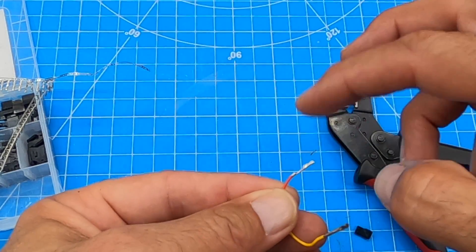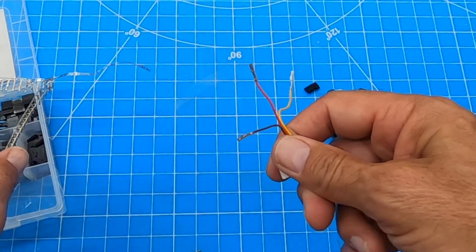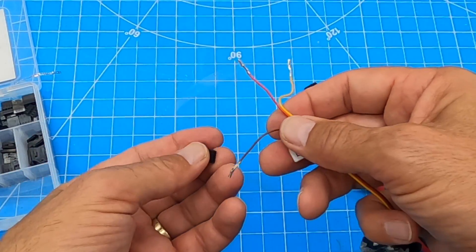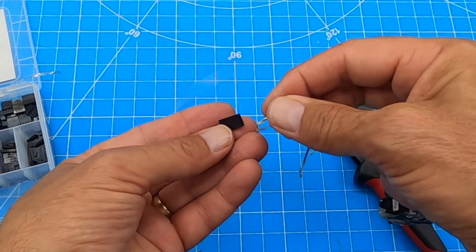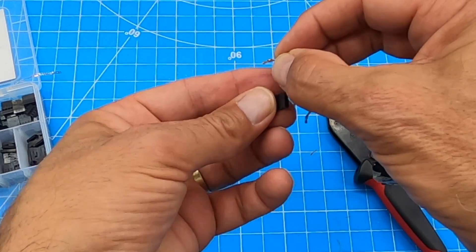All right, that connector's toast, so we pick up our new connector and we're gonna feed these in. This one's bent too, but we're good for example sake to show you how to put these back in.